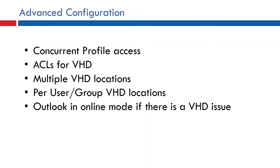A particularly important advanced configuration is Outlook fallback to online mode. In PVS environments with a set write cache size, if the VHD location is unavailable, Outlook would normally attempt to download a new OST into the write cache — if your write cache is 5 GB but your OST is 10 GB, the desktop will freeze because you've blown the write cache. FSLogix can fall back to Outlook online mode from cache mode if there is any network or storage issue, which is critical in PVS environments.